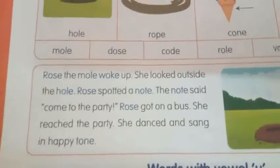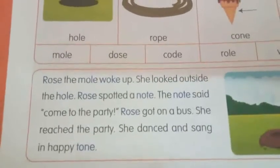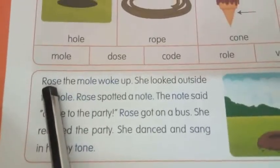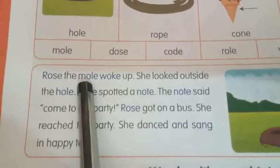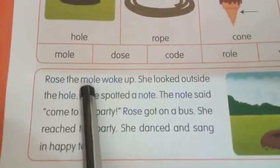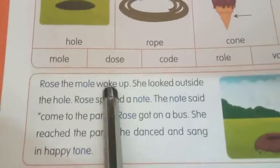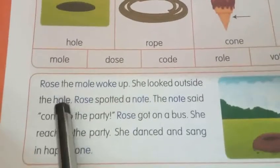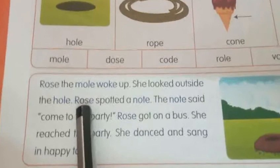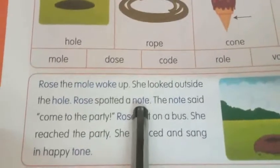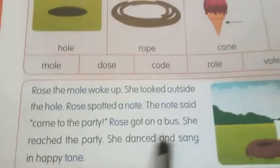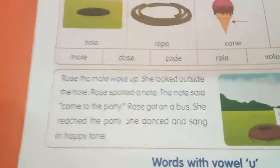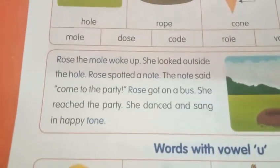Now I will say the magic word E with vowels on O words. Rose — can you repeat after me? Rose. Then, mole — can you repeat? Mole. Then, woke. Again, hole. Rose. Note. Note. Tone. So, these are the magic word E with vowels on O words.